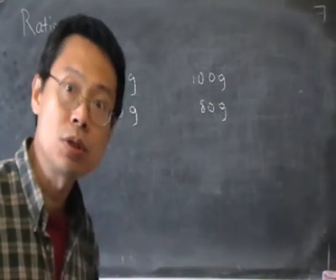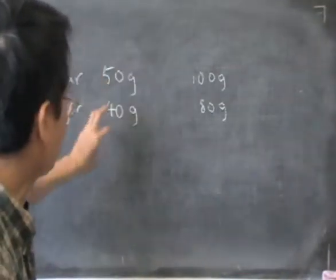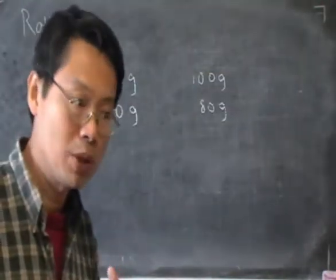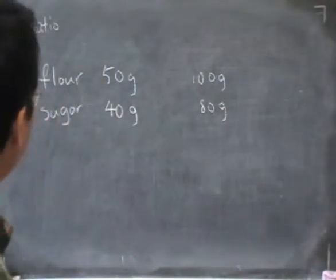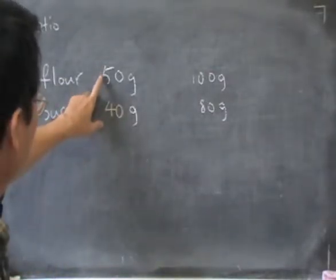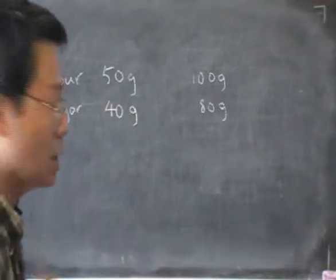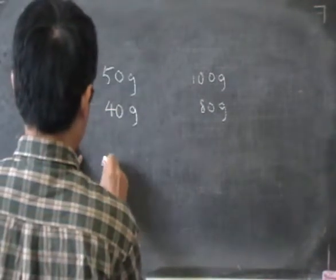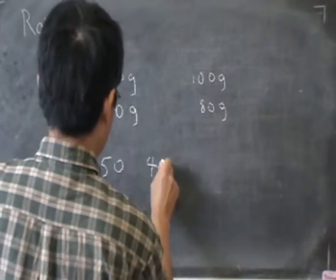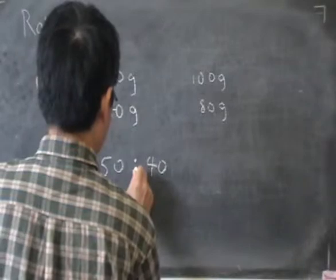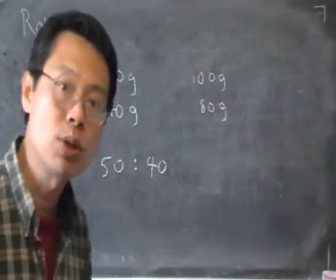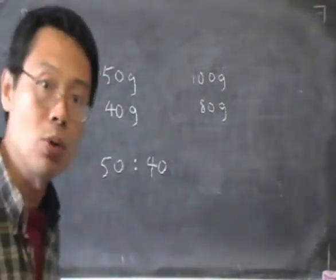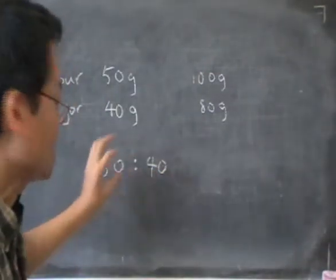It's a little bit complicated to remember 50 and 40 or 100 and 80 all the time. So the idea is to use a ratio — a simple number, some simple numbers to help us remember. By writing down two numbers with a colon between them, that's called a ratio, and it is supposed to represent a certain relation.